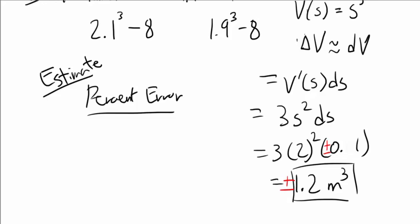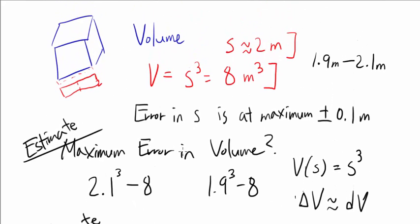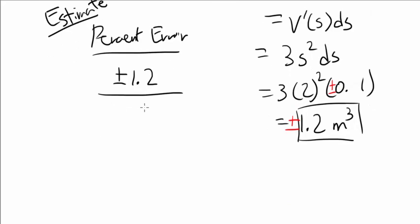Since this was plus or minus 0.1, our percent error is 1.2 divided by the volume that we got, which was 8. And what's 1.2 divided by 8? Well, 0.3 over 2, or 0.15, obviously plus or minus.